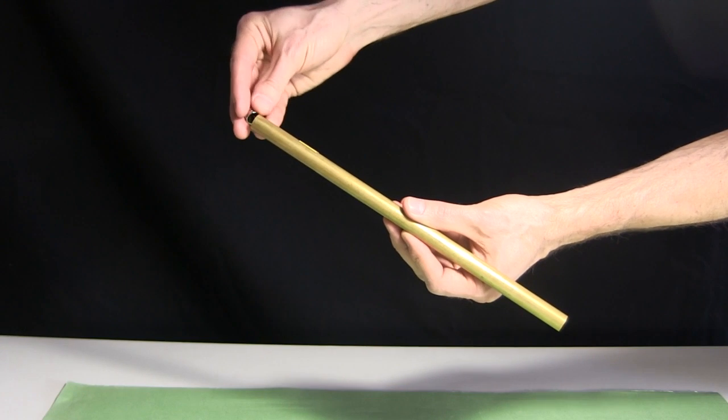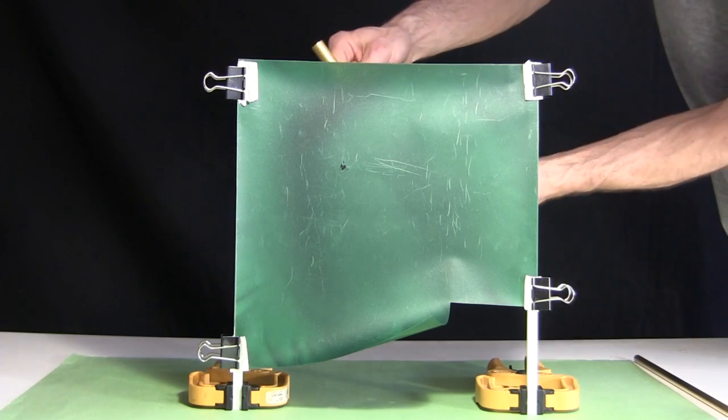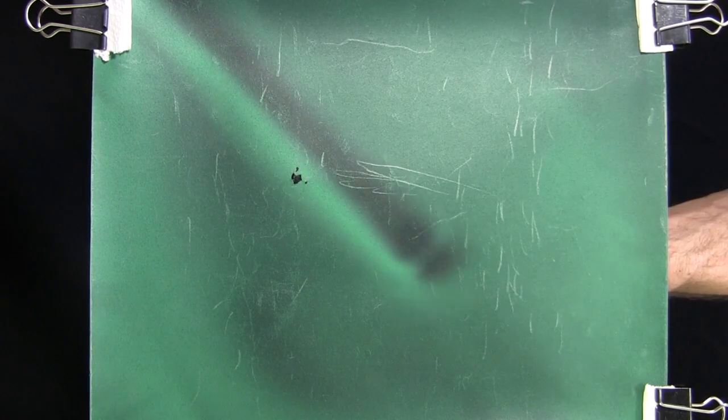You've probably seen the demonstration where you drop a magnet down a metal tube, and the magnet falls slowly. If we put the magnetic viewing film over the tube, we can see where the induced magnetic field is, and therefore where the magnet is.